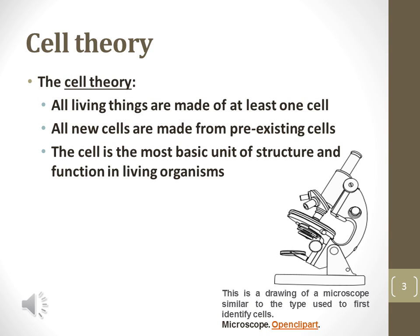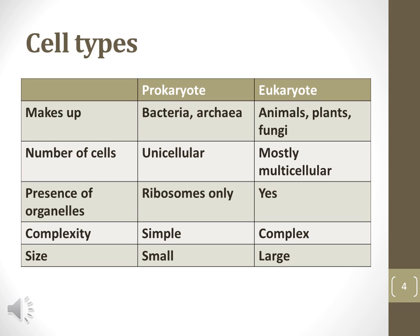Finally, cell theory states the cell is the most basic unit of structure and function in a living organism. This observation can be interpreted as meaning a cell is the most basic structure that can carry out all processes required for life, and any individual component of a cell cannot fulfill those requirements of life.